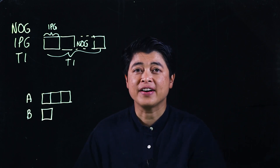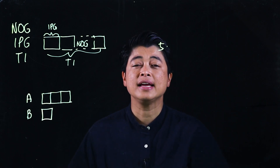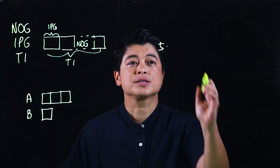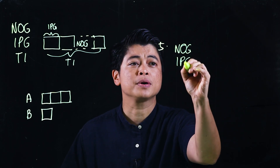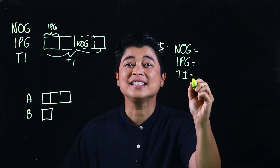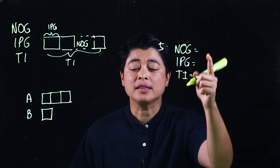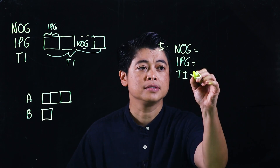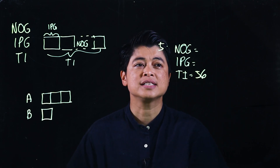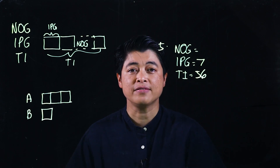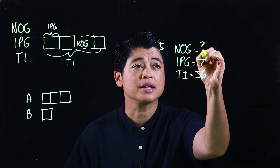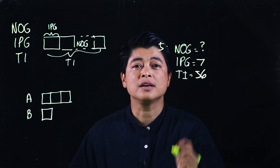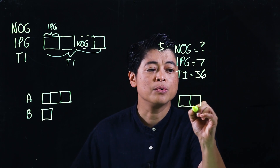Looking at page 114: problem five says Bernard had 56 balloons and packed them into boxes of seven — how many boxes did he use? Number of groups, items per group, and total: 56 balloons is the total, each box has seven. We're looking for the number of groups. In the bar model, since we don't know the number of groups, we use dot-dot-dot with a question mark in the middle.